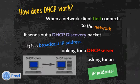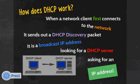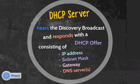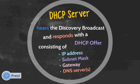So how does DHCP work? When a network client first connects to the network, it sends out a DHCP discovery packet. It's a broadcast IP address — 255.255.255.255 — and it's looking for a DHCP server and asking for an IP address.